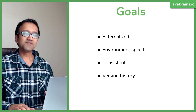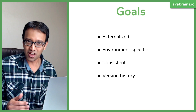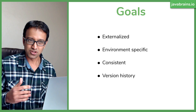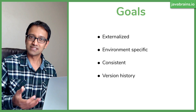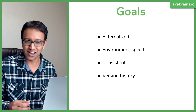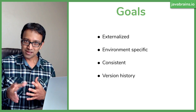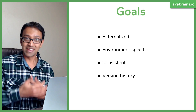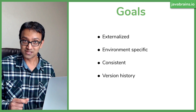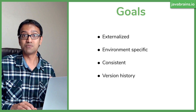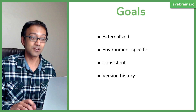The fourth goal is version history. When configuration is part of your code in source control, you get version history automatically. But when you externalize it, you gain the ability to push changes anytime — yet lose tracking of when changes were made. You need to be able to answer: when was this configuration change made, and what was the value before it?